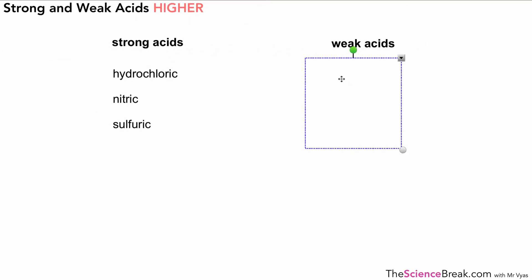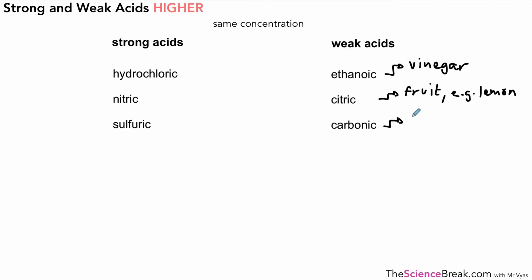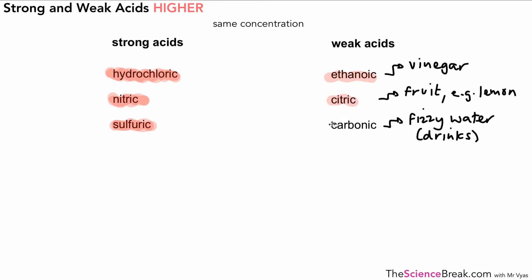We're going to see why we have acids of different strength even though concentrations might be the same. The weak acids are less common — we have ethanoic acid, which is found in vinegar; citric acid, found in citrus fruits like lemons; and carbonic acid, which is carbon dioxide dissolved in water, making fizzy water. So any fizzy drinks have carbonic acid in them. These two sets of acids can all be of the same concentration, but the acids can be of different strengths.